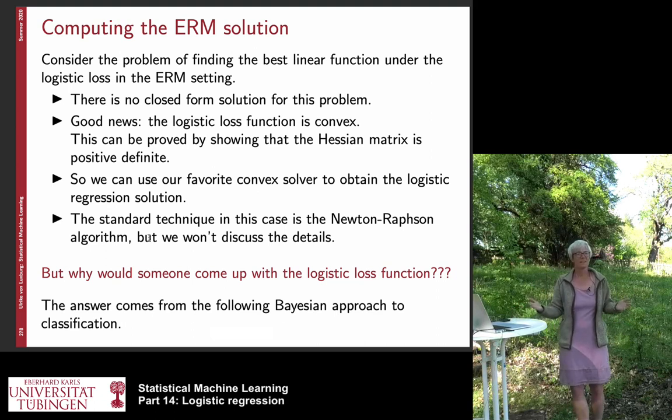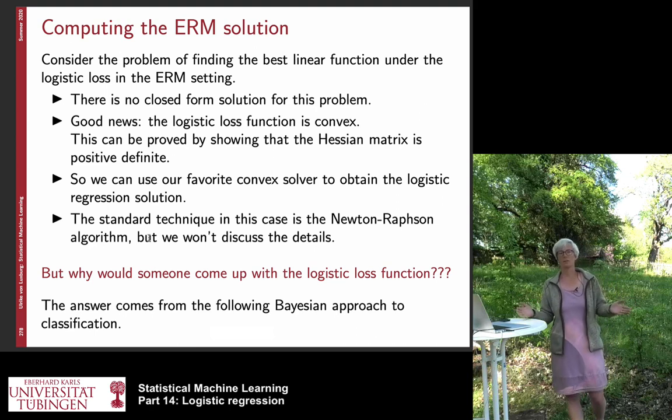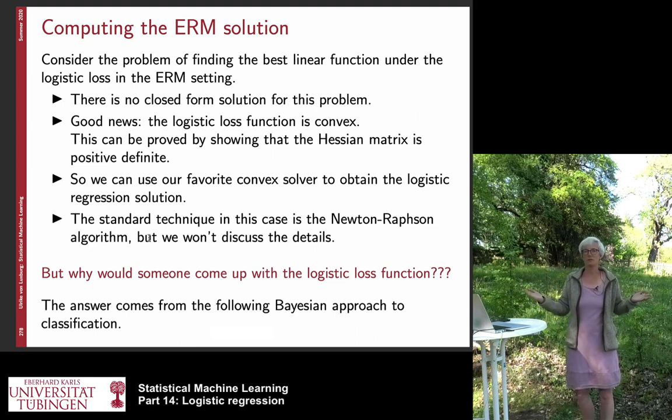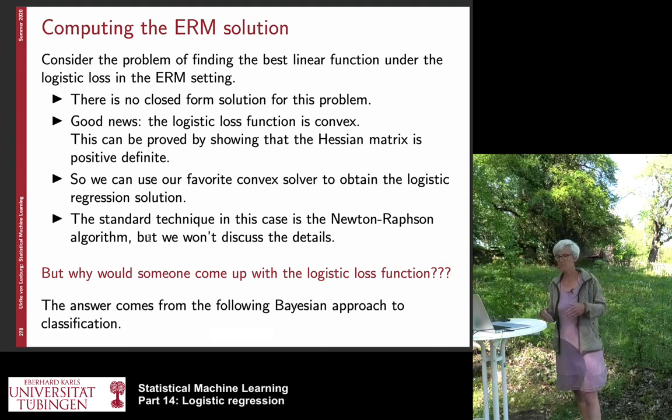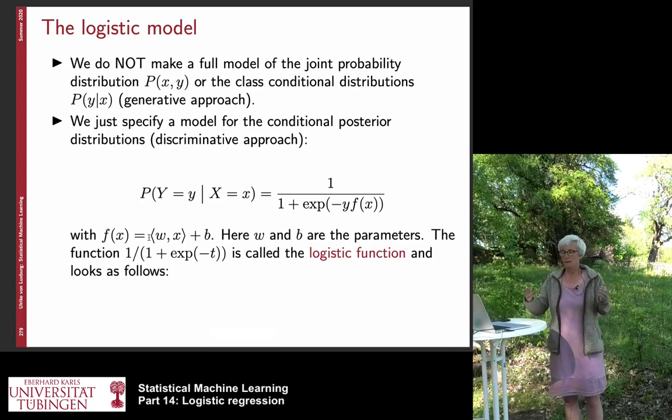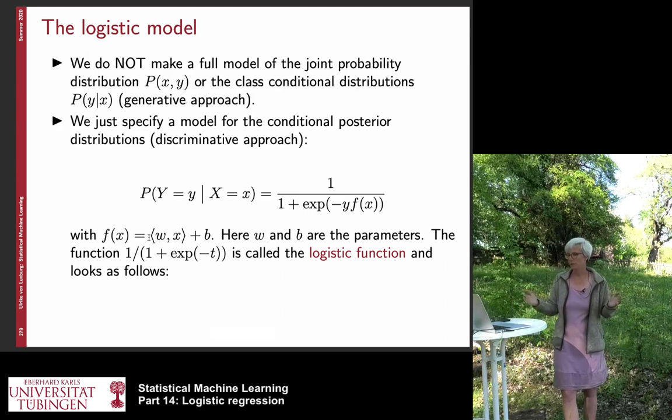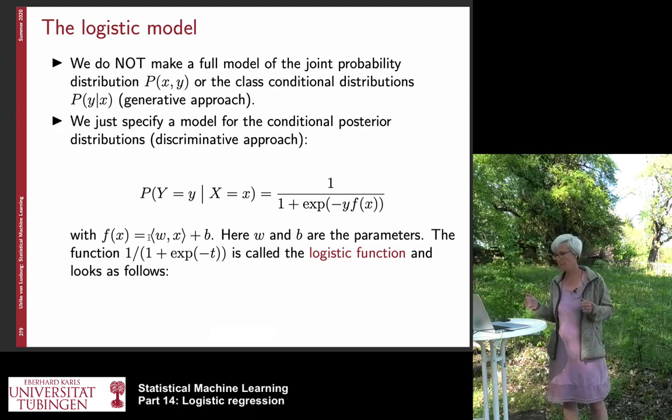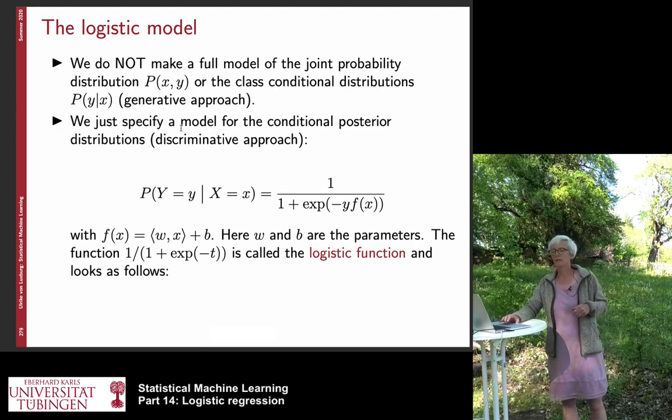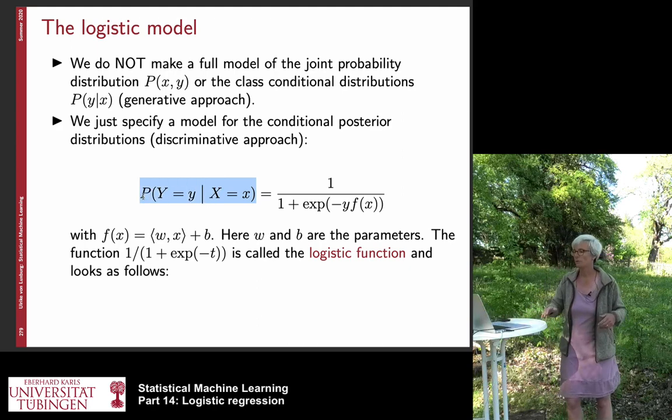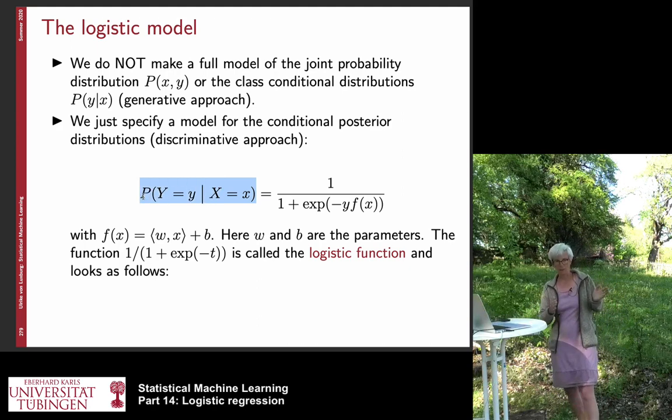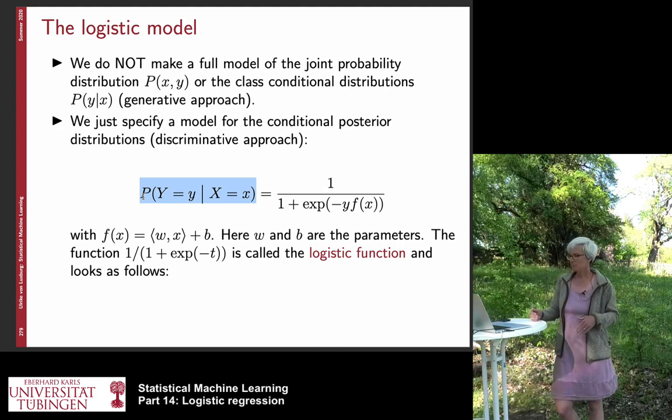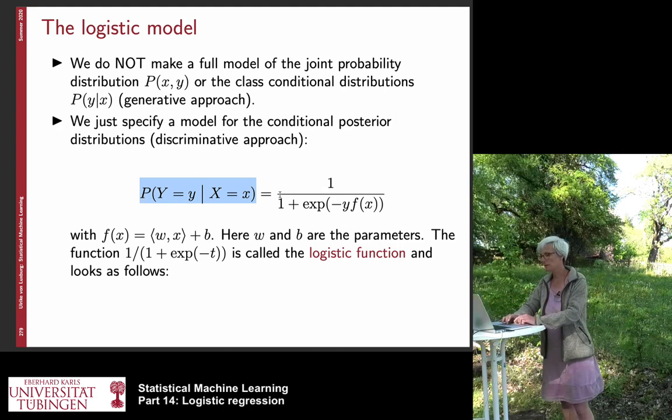So this is all about logistic regression. But now why in the first place would someone come up with a logistic loss function? It sounds like a completely arbitrary choice. Why would you define a loss function in such a way? And here is again a connection to the Bayesian kind of approach. In this approach, we do not make a full model of the joint probability distribution or the class conditional distributions between x and y. We only, so this is what would happen in the generative approach. We are in a discriminative approach where we are only interested in the probability of observing a certain output label y given the input x.